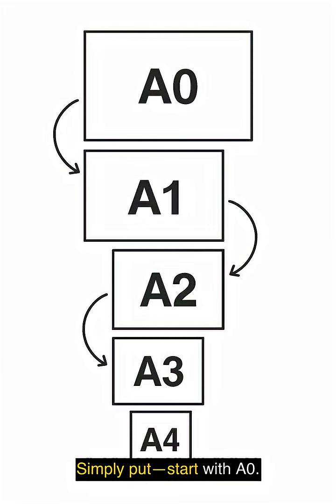Simply put, start with A0. One fold becomes A1. Another fold becomes A2. One more becomes A3. A fourth fold gives us A4, and folding again gives us A5.